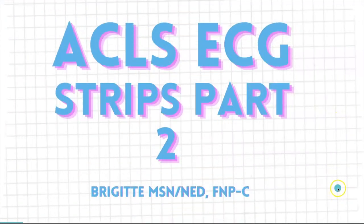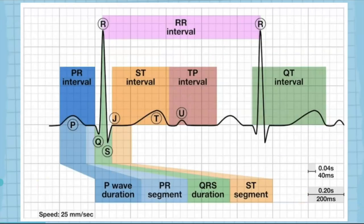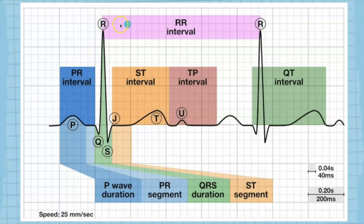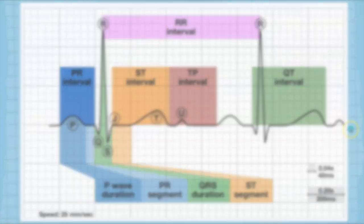Welcome to ACLS ECG strips part two. So if you are taking the ACLS, I'm going to assume that you pretty much already know your way around an EKG or an ECG. But things I will be talking about today — this is how you measure the PR interval and also the R to R interval, which is important. I will be focusing on the PR interval today and the R to R.